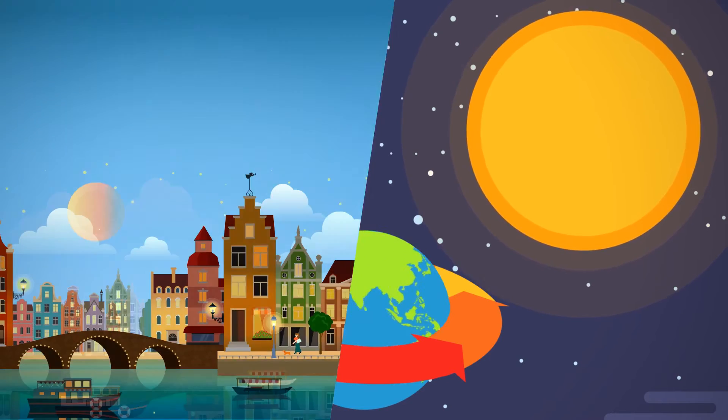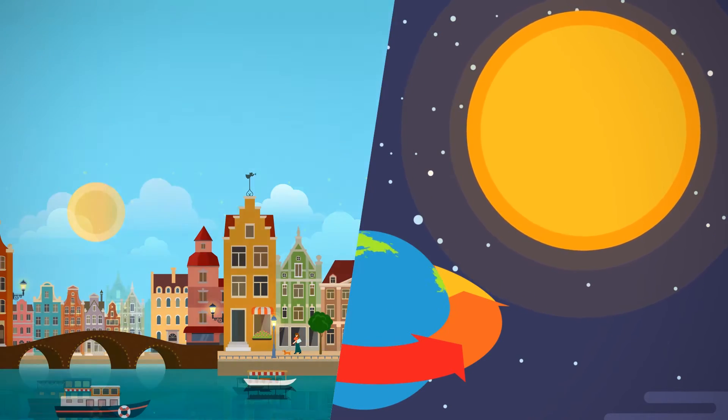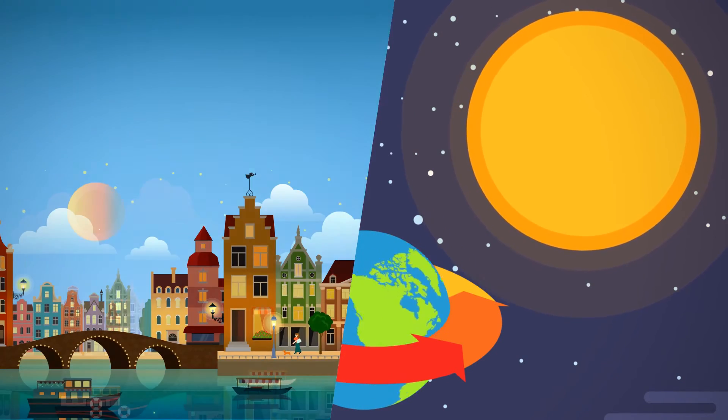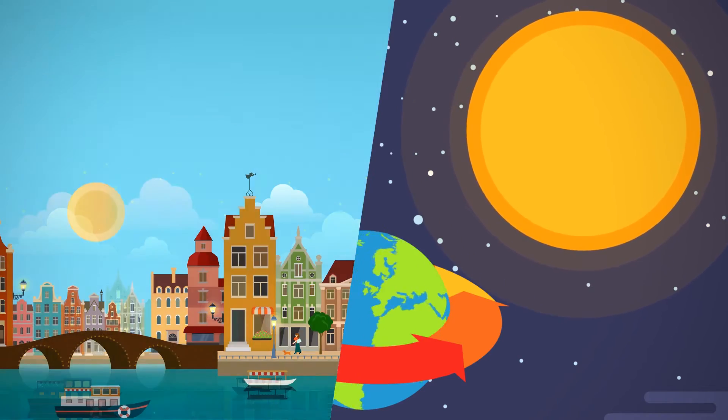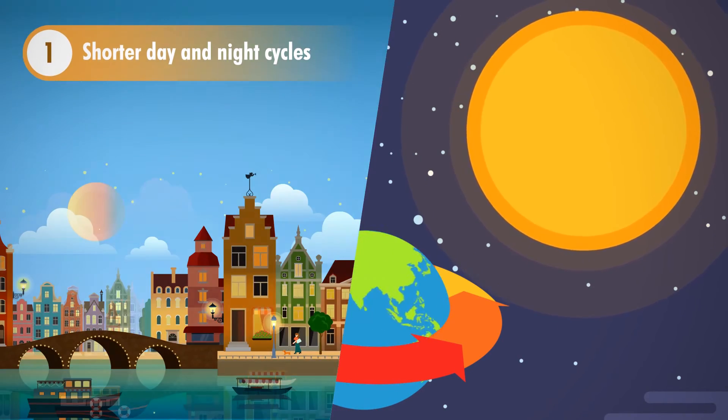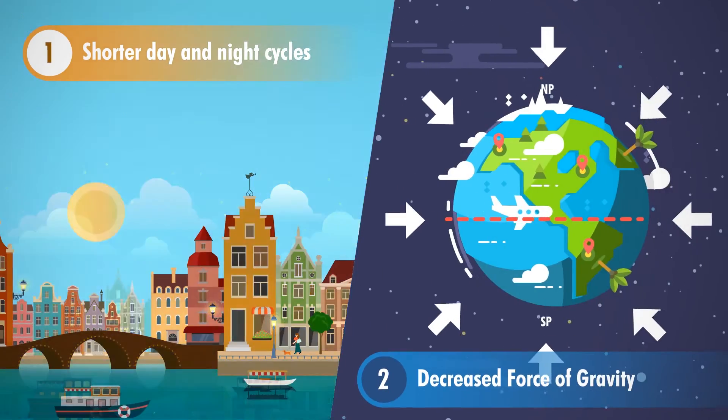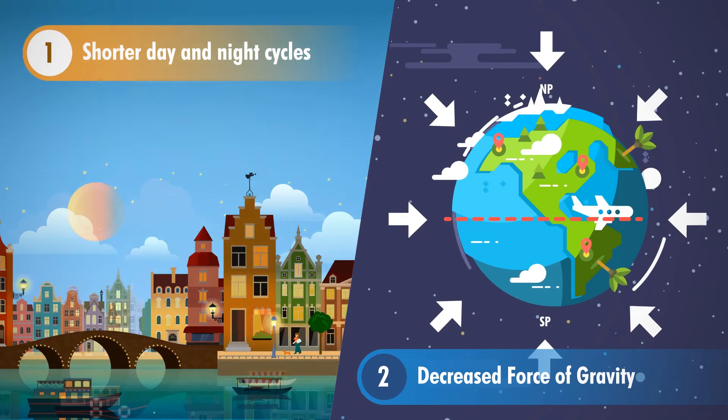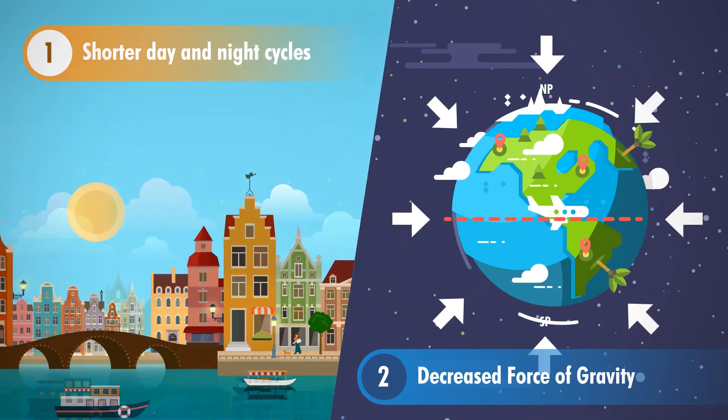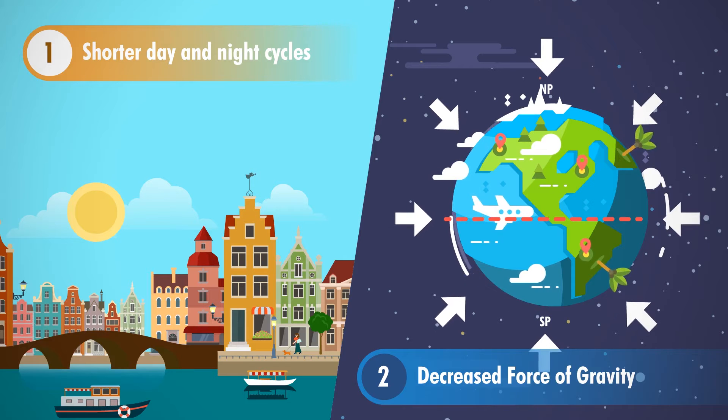The most instantly noticeable effect would be the days becoming half as long as they are now. The sun would move across the sky twice as fast, and every form of life would have to get used to shorter day and night cycles. The force of gravity would also decrease as the Earth spun faster, although this change would affect the equator to a much greater extent than the poles.